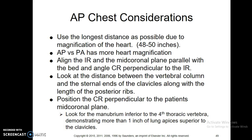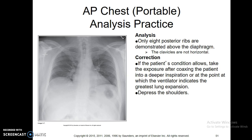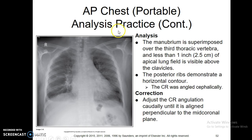AP chest — just try to get as much distance as you can. Doing portables, you want to match up your cassette to the collimator head and make sure those two are parallel to one another. You want the clavicles to be right around the T2-T3 area, manubrium right below around T4. If you're not seeing enough apices, the patient is probably lying back too much, so angle down towards the patient a bit to bring the clavicles down a little more.